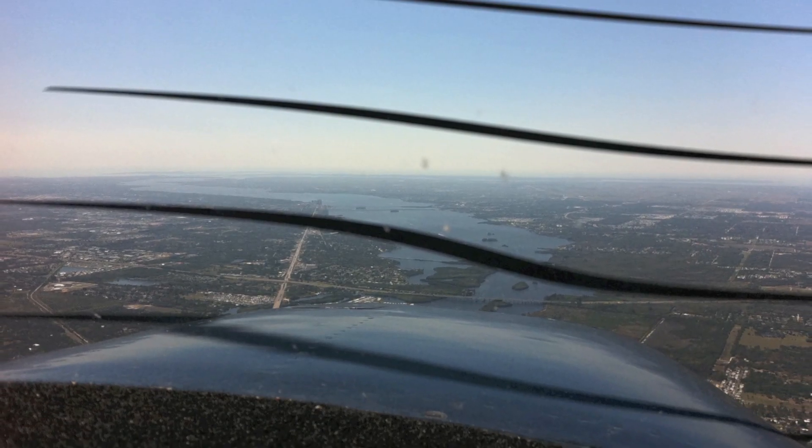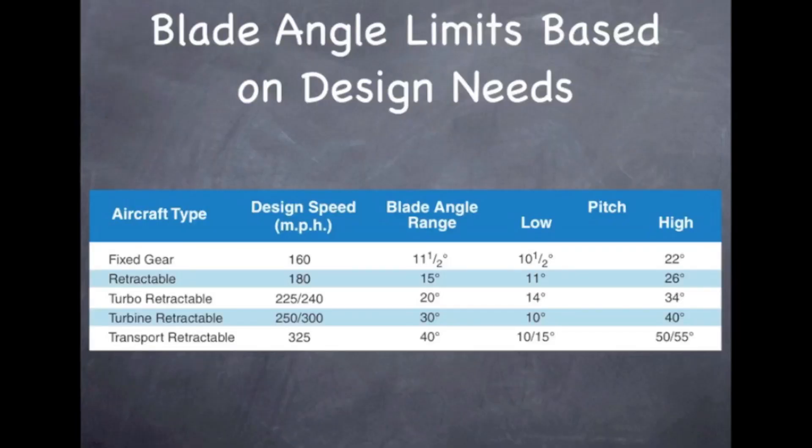Let's talk about the different realms of flight and the blade angles. Most of these aircraft are designed to have a blade angle for different types of aircraft that we would fly, for instance, like a fixed, a retractable, turbo. The pitch range on these propellers goes from a low to a high of a certain number of degrees. Most of them are around 11 to 26 degrees on the airplanes that we fly. But in transport category, they can be very low and go to a very high pitch setting.